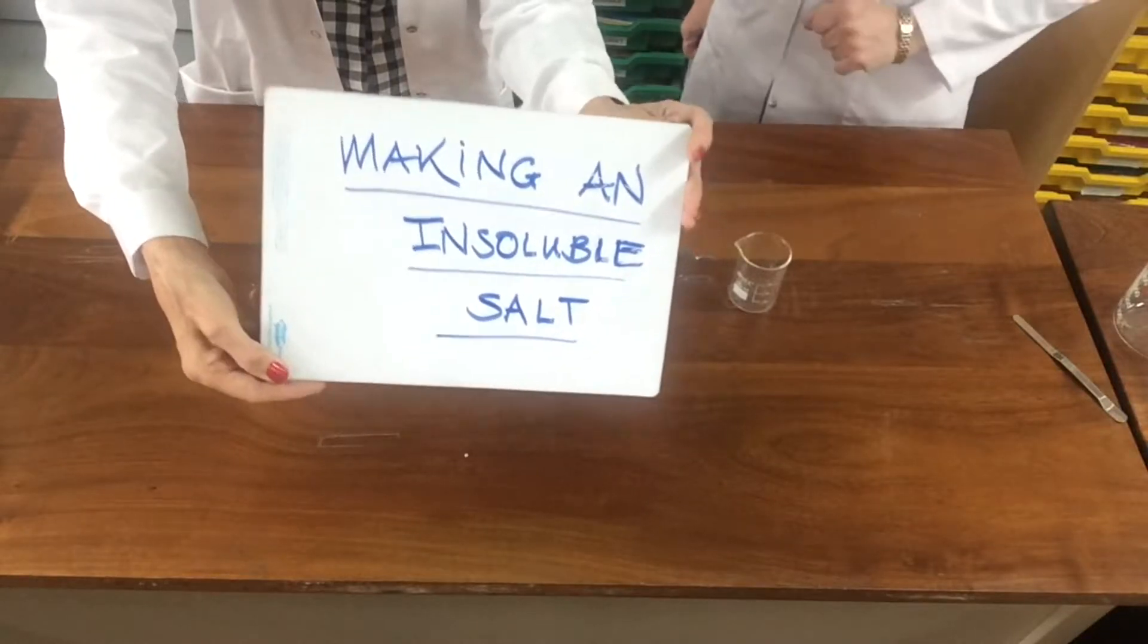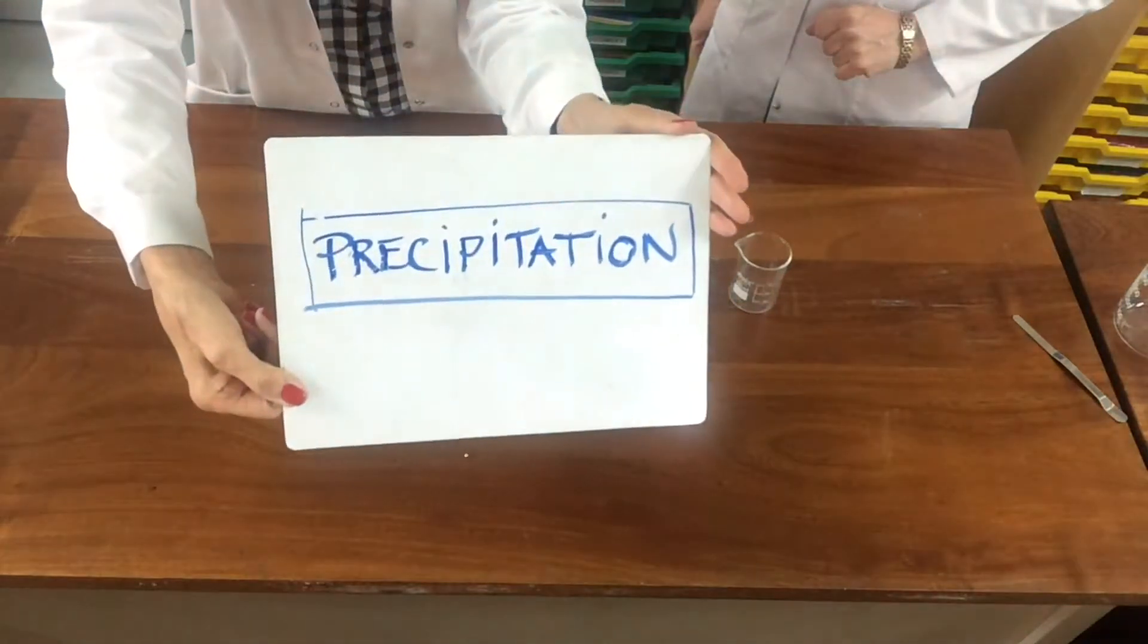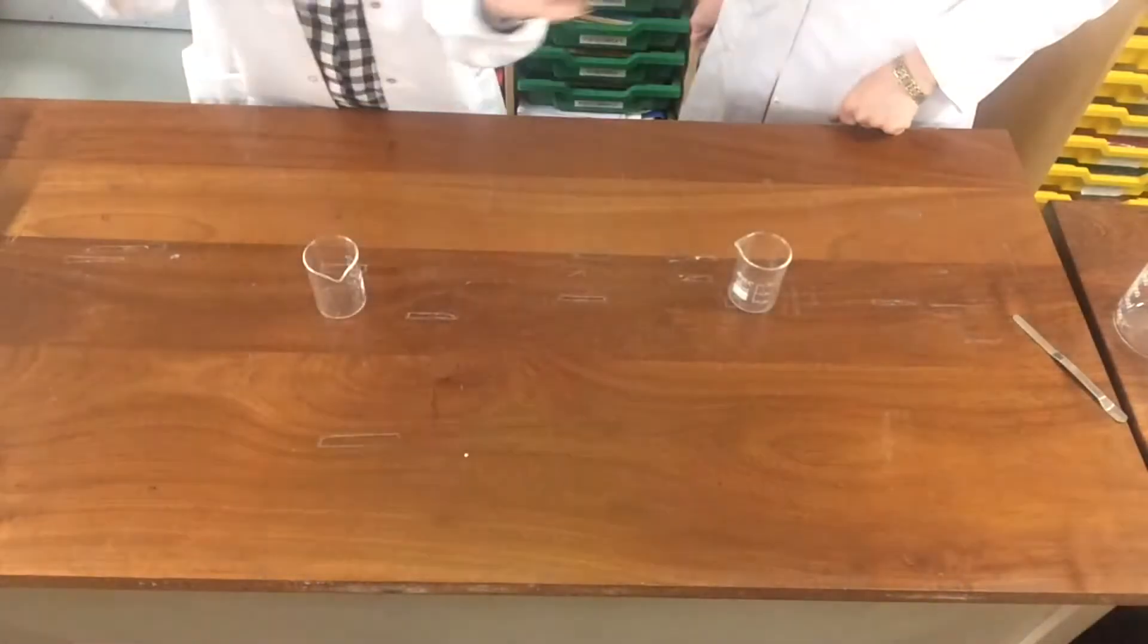Doesn't that have a special name Miss McLaren? Yes you are so right Dr. Born. That method of making this insoluble salt is known as precipitation. So let's begin.